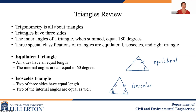An equilateral triangle, as its name would suggest, has all three sides of equal length, and all of the internal angles are each equal to 60 degrees. So we have three angles that are the same and three side lengths that are the same. An isosceles triangle has two sides that have equal length, and two of the internal angles are equal as well, such as this. But one of the angles and one of the sides are not equal.